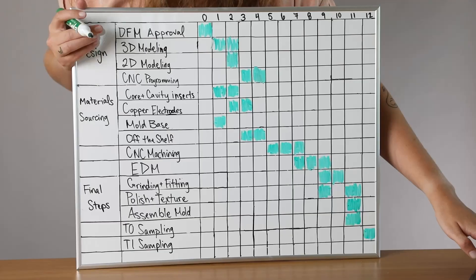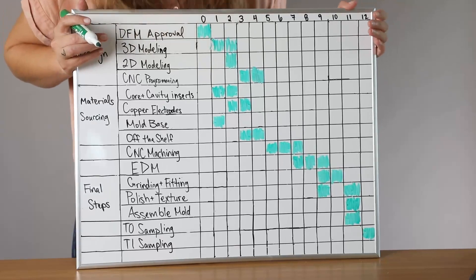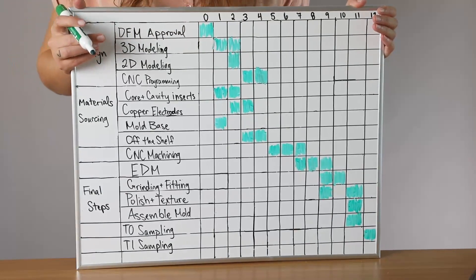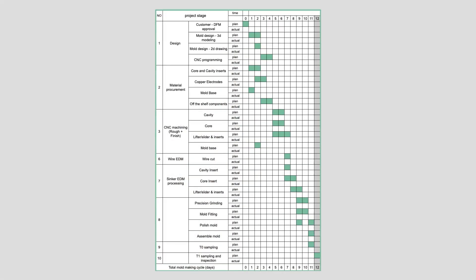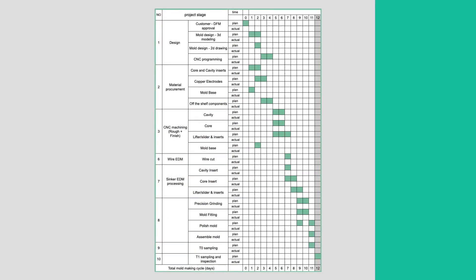Voila! There you have it. These are all the steps that go into the process of making the tooling for your plastic injection molded parts. Here is how the overall process is laid out. For this specific part, Fictiv can make T1 parts in just 12 days. We also have this timeline and a handy Gantt chart that you can download by clicking the link in the description. This Gantt chart also includes a blank spreadsheet for you to use to plan out your own injection molding project. Thanks so much for watching! Don't forget to subscribe to Fictiv for more engineering and manufacturing videos like this one!